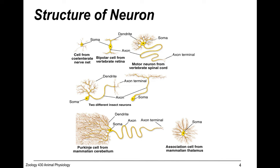Neurons can look really different and have lots of different shapes. Sometimes they have two short axons — bipolar cells. They can be primarily soma with dendrites, or they can have long axons and an immense number of input connections.